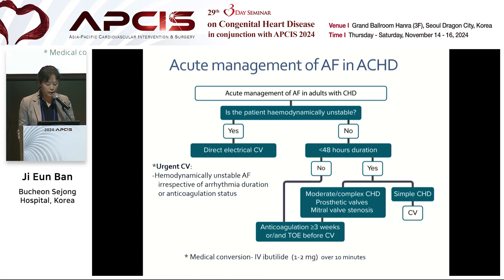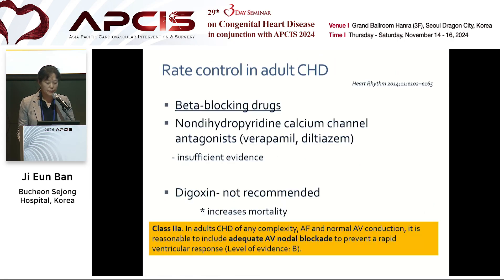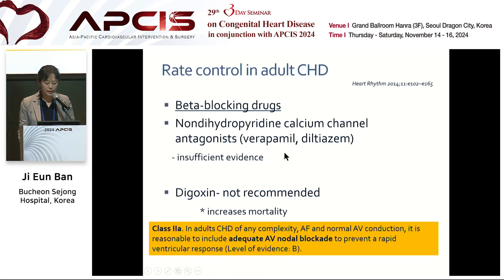However, this drug is not available in Korea. For rate control of AF, beta blocker is recommended in congenital heart disease. Calcium channel blocker can also be used, but evidence is insufficient. Digoxin is not recommended in congenital heart disease.